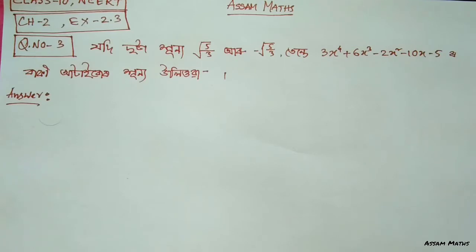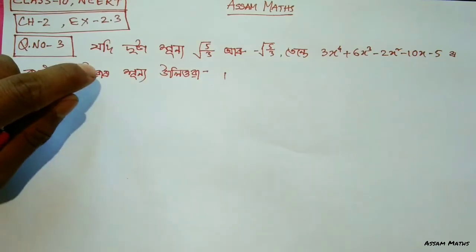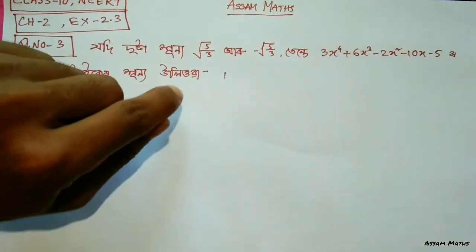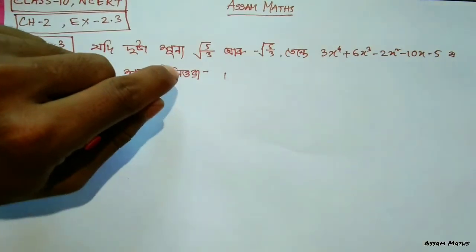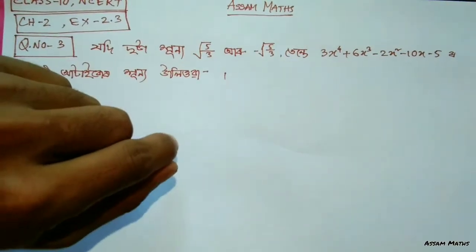Question number 3 is the question. The question involves the root of the bar — 5 by 3 is the root.